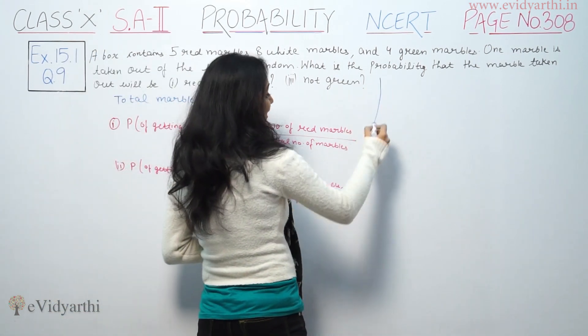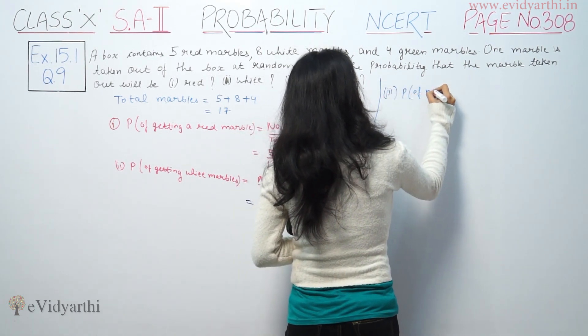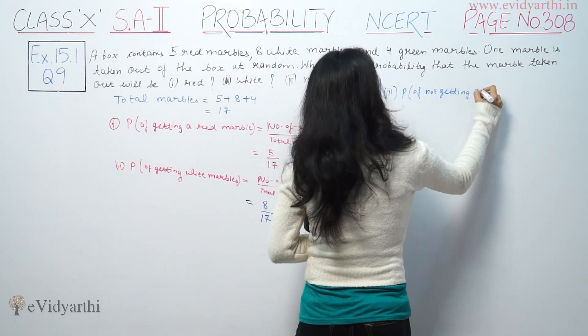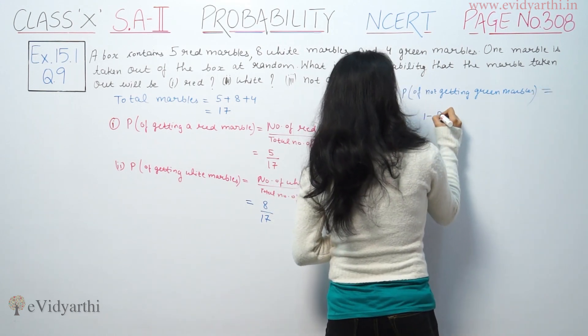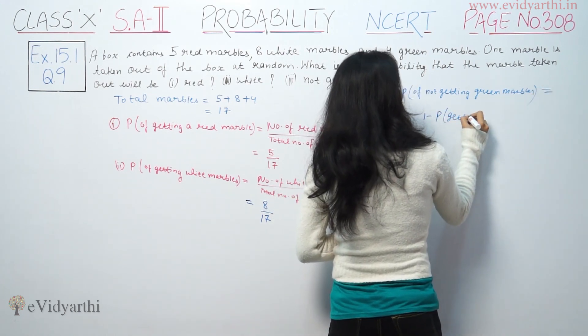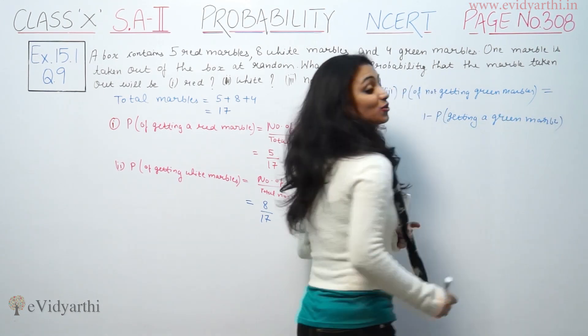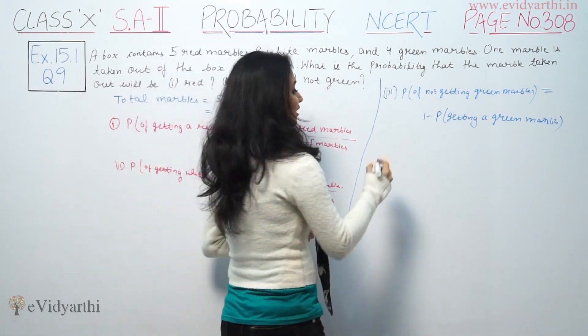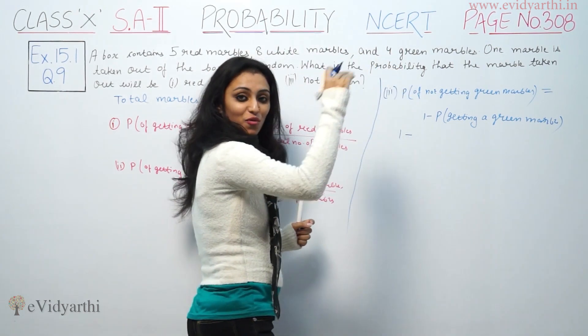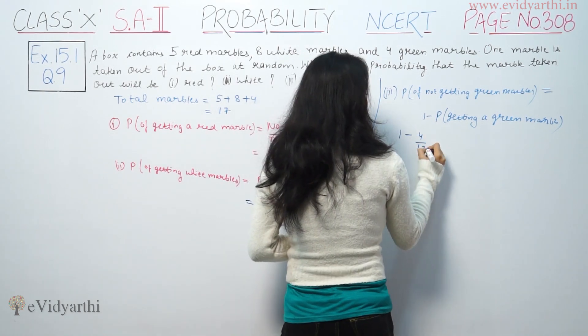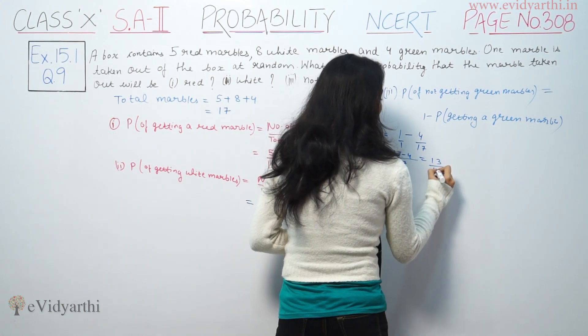Third case we have not green. If we look at the probability of not getting green marbles, what is the probability of getting green marbles? 4 over 17. So this is 17 minus 4 is 13 over 17.